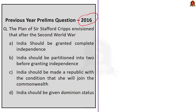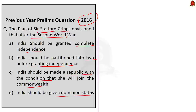The prelims question is from the 2016 paper. The question reads: 'The plan of Sir Stafford Cripps envisioned that after the Second World War—' with statements: India should be granted complete independence; India should be partitioned into two before granting independence; India should be made a republic with the condition she will join the Commonwealth; India should be given dominion status. The correct answer is option D: India should be given dominion status.